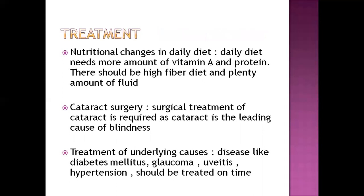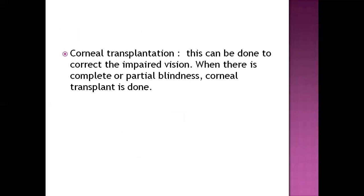Treatment includes nutritional changes — vitamin A and protein supplementation should be provided in daily form, and the diet should be fiber-rich with plenty of food. Cataract surgery can help the patient prevent complications arising from cataract. Treatment of other causes like diabetes, glaucoma, uveitis, and hypertension can also prevent blindness. Additionally, corneal transplantation can correct impaired vision — once the cornea is transplanted, a partially or fully blind person can acquire normal vision again.